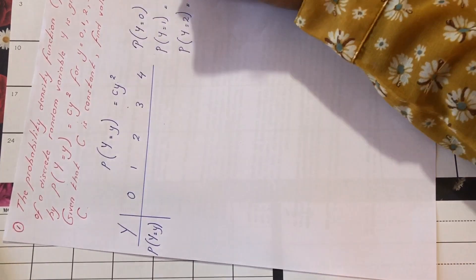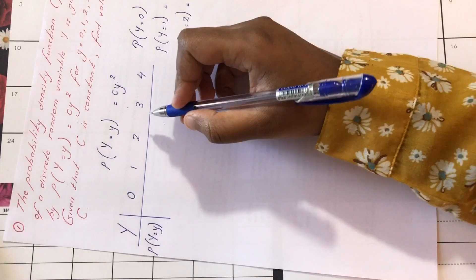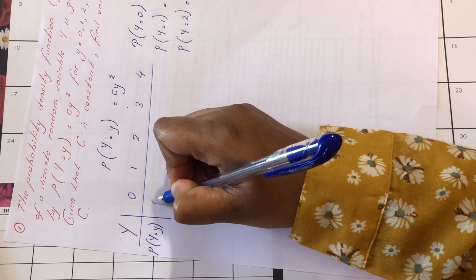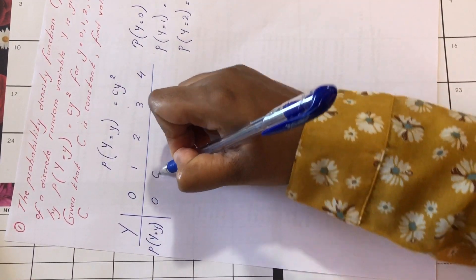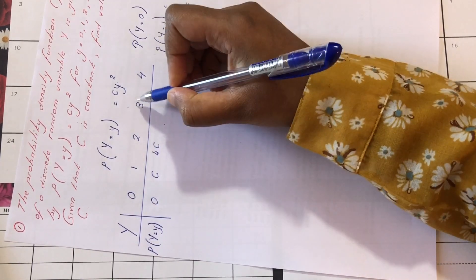We have probability of y equals 2. C times 2 to the square, we are going to have 4c. And it goes to 4. So here we have 0, here we have c, here we have 4c. And then 3 square, we are going to have 9c, and 4 square is 16c.